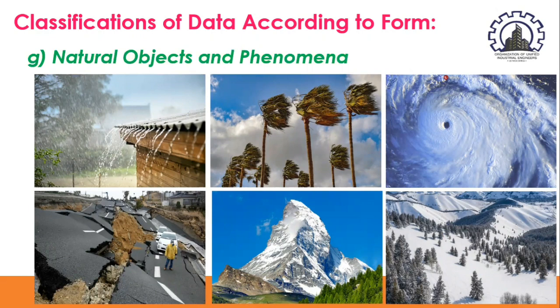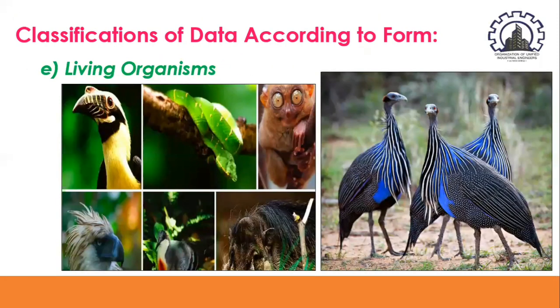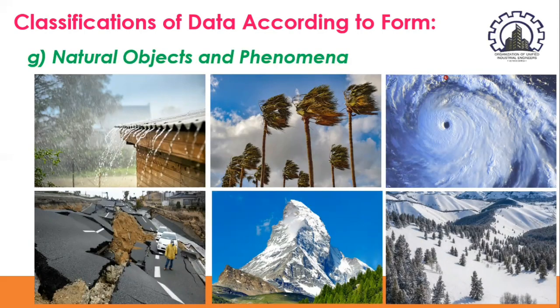Examples of natural objects and phenomena are rain, wind, typhoon, water, earthquake, mountain, snow, etc. So data from the last three sources — living organisms, man-made materials, and natural objects and phenomena — are non-verbal or concrete data. Another classification of data according to source would be secondary data.